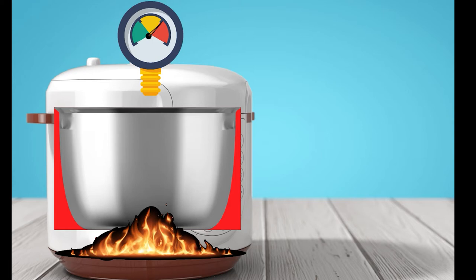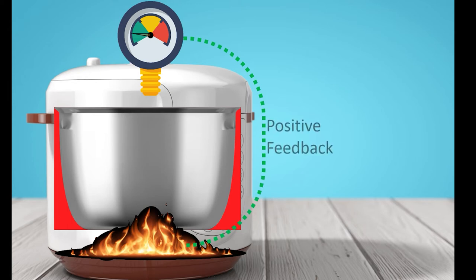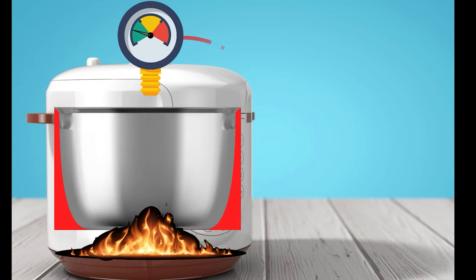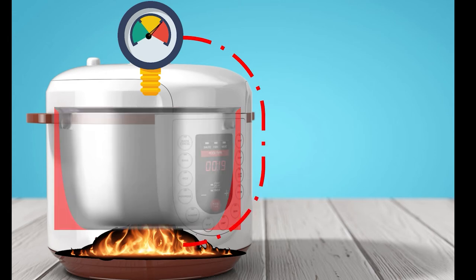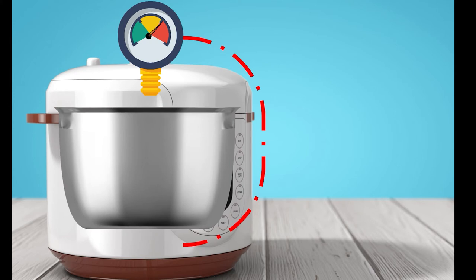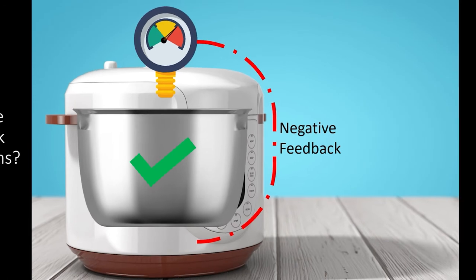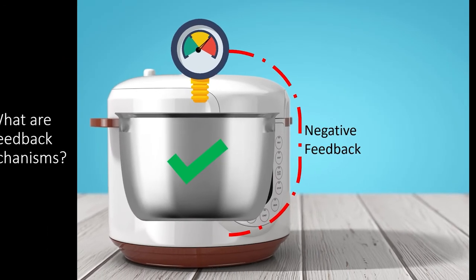This is why a pressure cooker needs feedback mechanisms. When the pressure sensor senses low pressure, it sends a signal to the computer that increases the heat from the heating element — this is a form of positive feedback, because it tells the heating process to continue. However, when the pressure starts to build up within the pot, the pressure sensor sends a new signal that turns the heat off, stopping the pot from boiling and allowing the pressure cooker to maintain pressure without exploding. This is negative feedback, because it stops the process from continuing, which allows the pressure cooker to maintain homeostasis.